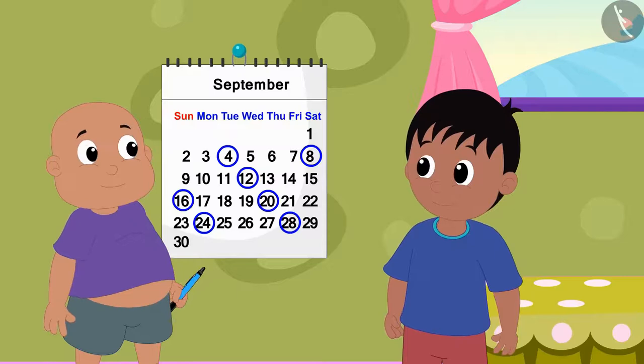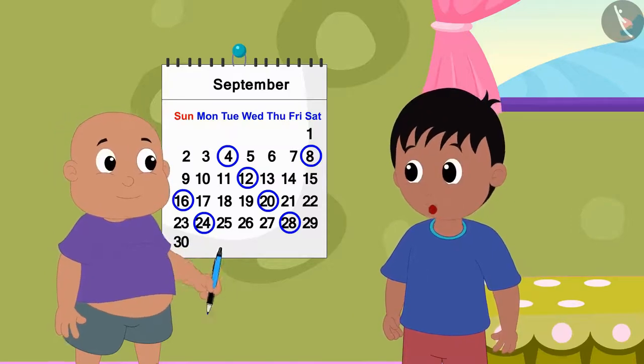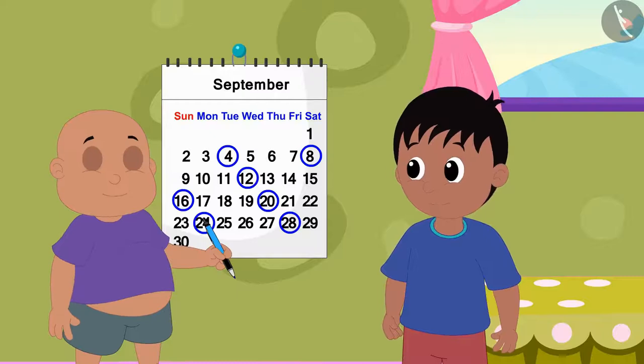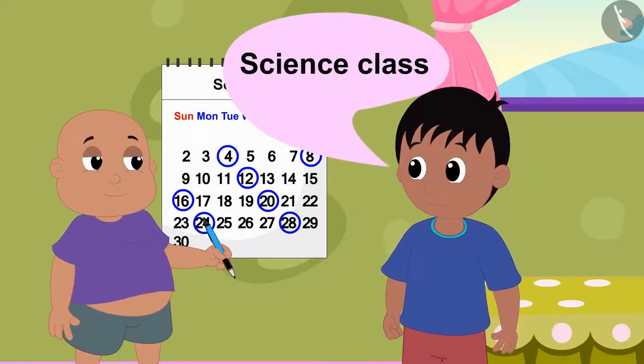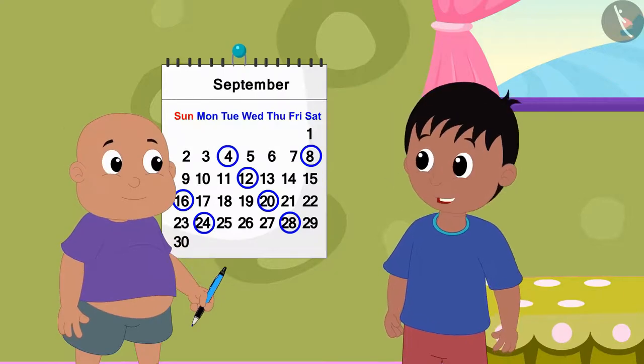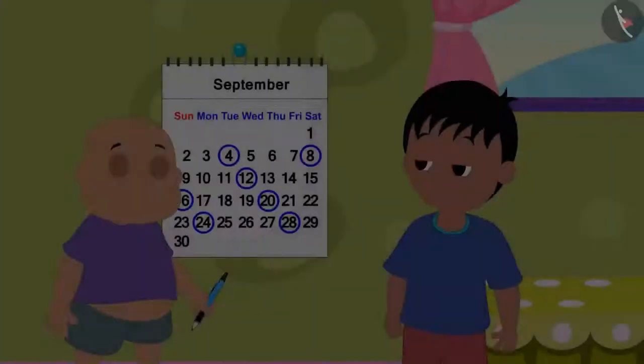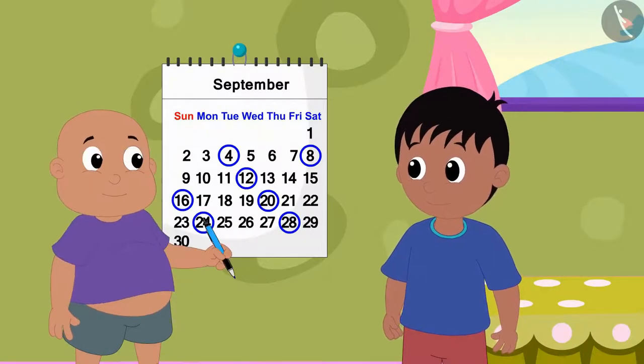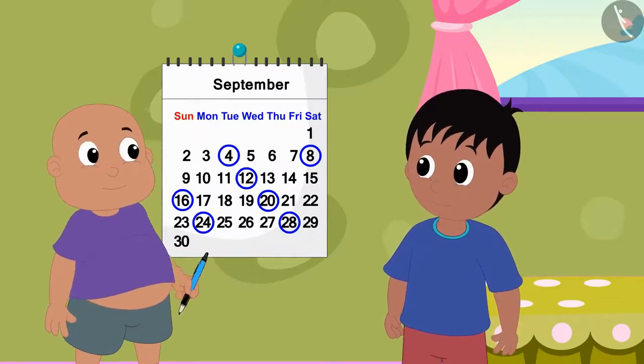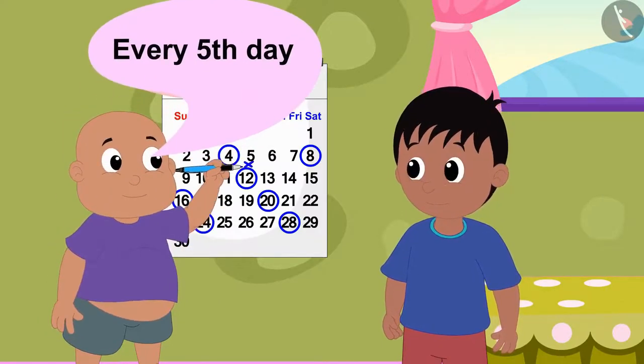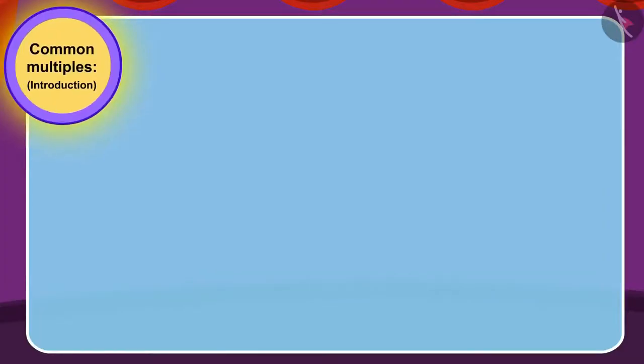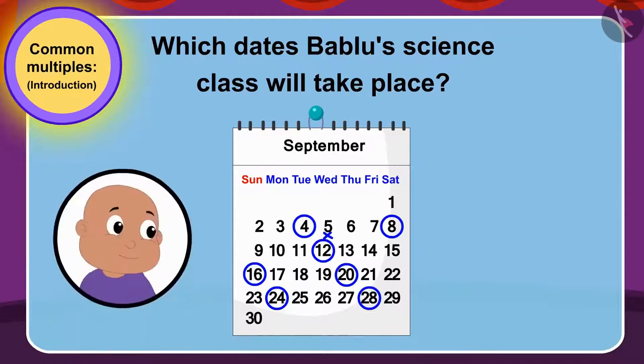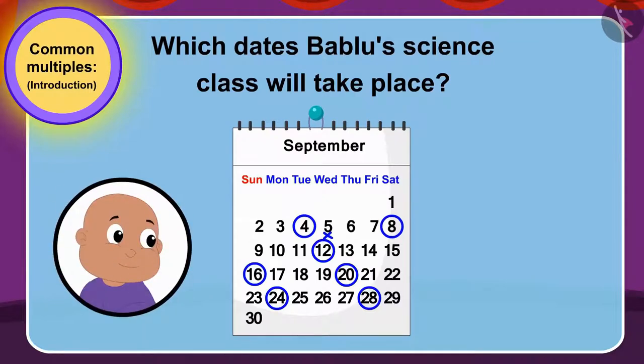Now Raju said to Bablu, your class is on so many days and you have also enrolled in science class. So, on what days will your science class be? Bablu told Raju that his science class would be every fifth day. Can you use multiples to tell on which dates Bablu's science class will take place?